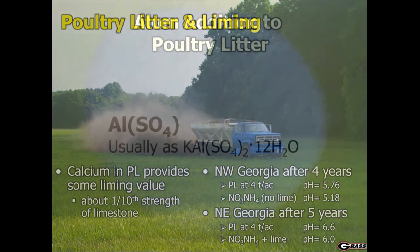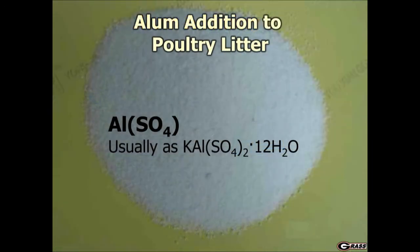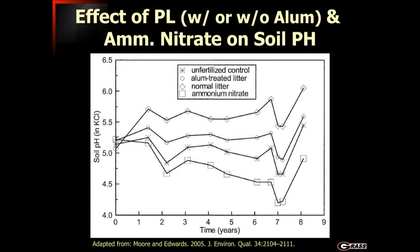We're oftentimes asked about the addition of alum. Alum is used in poultry houses to control ammonia loss and can have an effect on the material and how it is used in the soil. Here's a study from the University of Arkansas where they monitored soil pH over several years. This is salt pH, so to convert to water pH you would add 0.6 pH units.